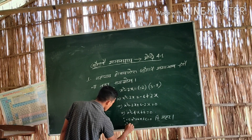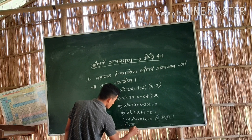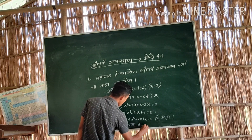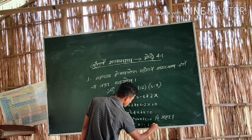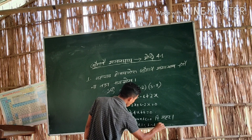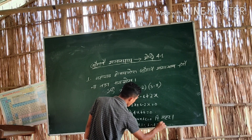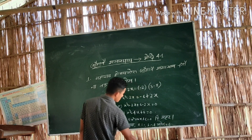So a is equal to 1, b is equal to minus 4, and c is equal to 6.